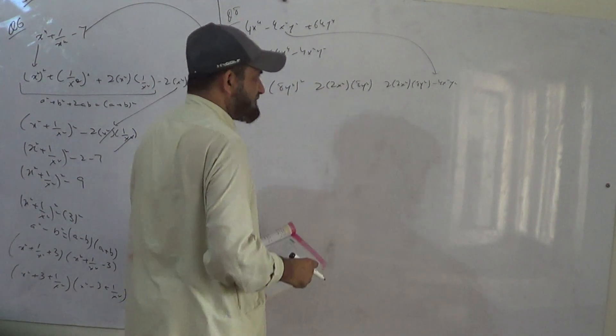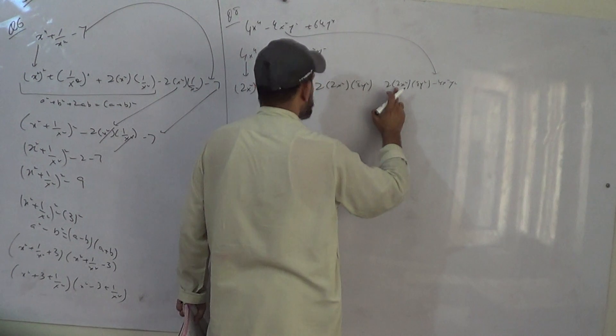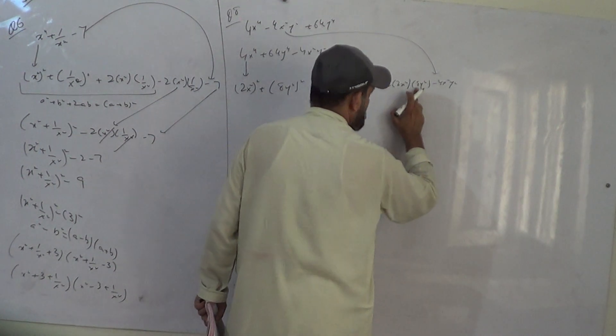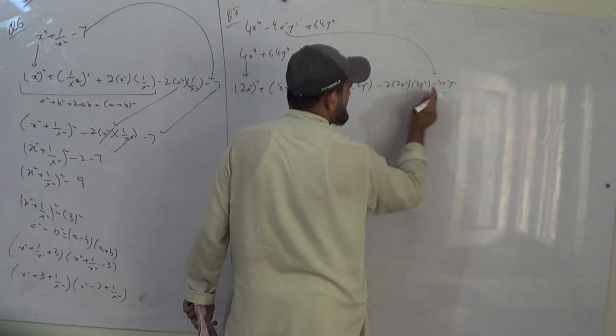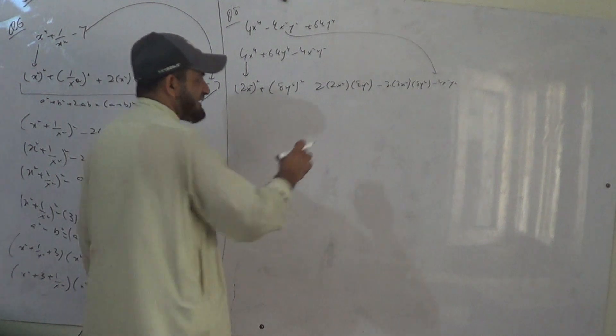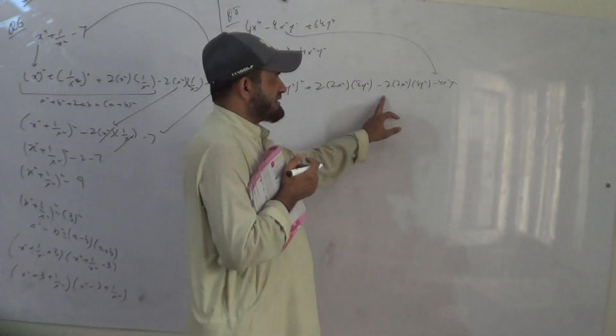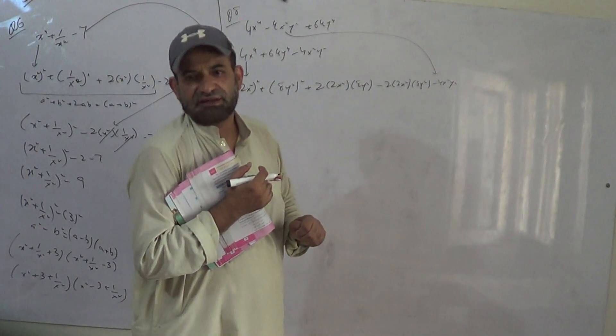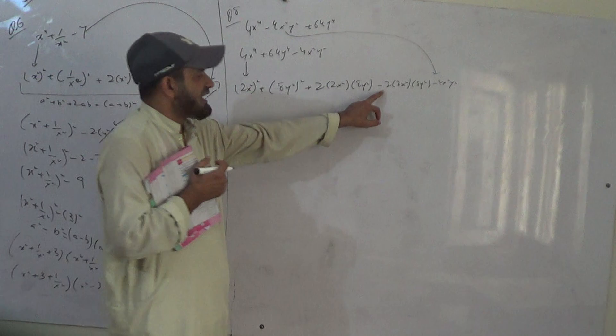Now if I write minus here, 2 into 2 is 4. 4 times 8 we get 32. It's minus. Minus 32 minus 4 gives you minus 36. And 36 is a perfect square. Therefore I write minus here and plus here. If I write plus here, 32 minus 4 gives you 28. It's not a perfect square. Therefore I write minus here and plus here.